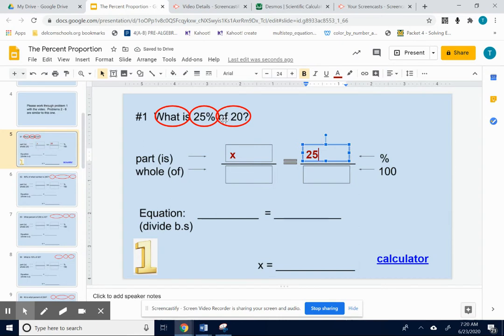Okay, next thing you see is of 20. So the of number goes on the bottom left. So type in 20.